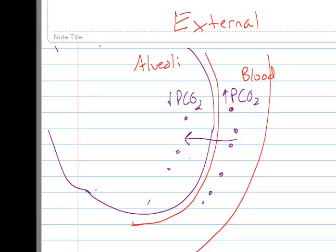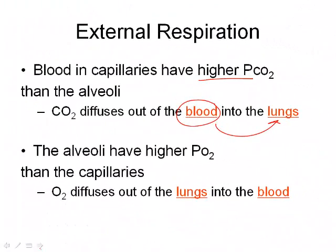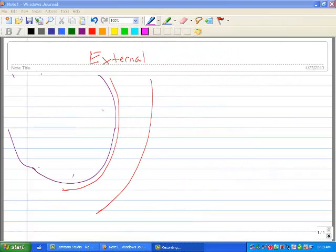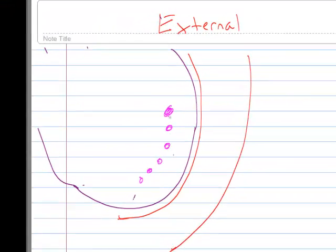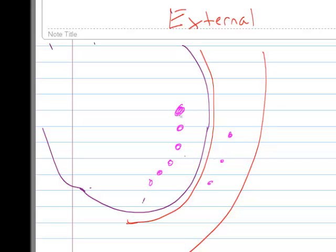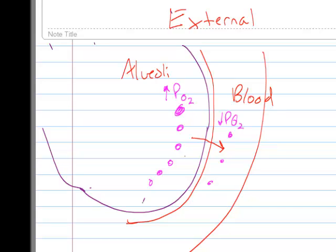If the alveoli have higher O2 than the capillaries, the O2 is going to diffuse into our blood — this happens after we inhale. When we breathe in a lot of oxygen, and since our blood has already transported oxygen to our cells, there's not much oxygen left in the blood. The PO2 in the lungs is much higher than in the blood, so oxygen diffuses across the membrane from the alveoli into the blood, where it can be transported to our cells.